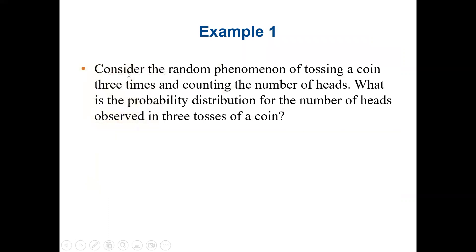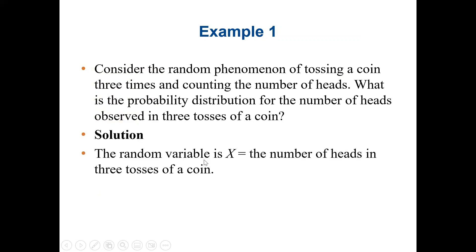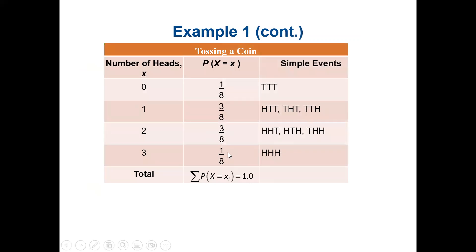Let's see our first example. We consider the random phenomenon of tossing a coin three times and counting the number of heads. Our random variable is discrete because it's based on counting. Every time we toss a coin we have two outcomes, head and tail. Tossing it three times gives us two to the power three — eight possible combinations. That's why we have probabilities like one divided by eight and three divided by eight.